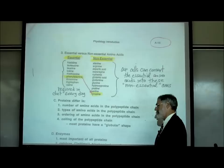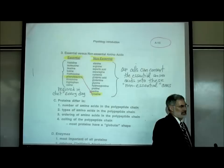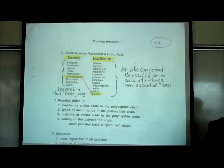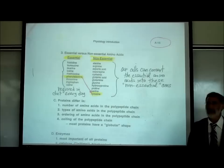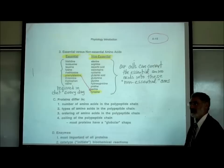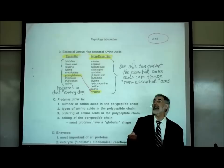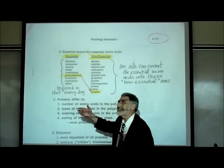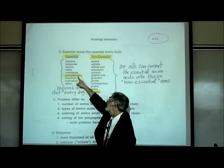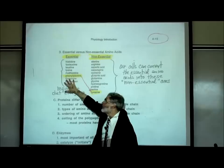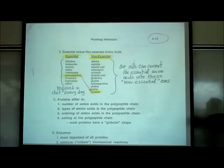In nutrition classes they make a distinction between foods containing all the essential amino acids we need — called complete protein foods — and those that don't, called incomplete protein foods. You don't need to memorize which amino acids are essential, but you should understand what's meant by an essential amino acid versus a non-essential one, and why it's non-essential: because we can convert an essential one into it.